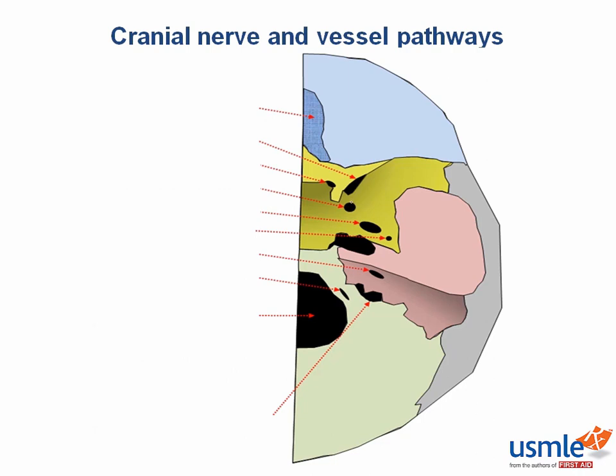There are many holes in the skull called foramina that cranial nerves and other structures pass through to exit the skull. We're going to go through these from anterior to posterior. Most anterior is the cribriform plate. This isn't a single opening but rather a meshwork of many tiny holes that cranial nerve one passes through. Cranial nerve one is for the sensation of smell and lies above the nasal cavity, in the ethmoid bone.